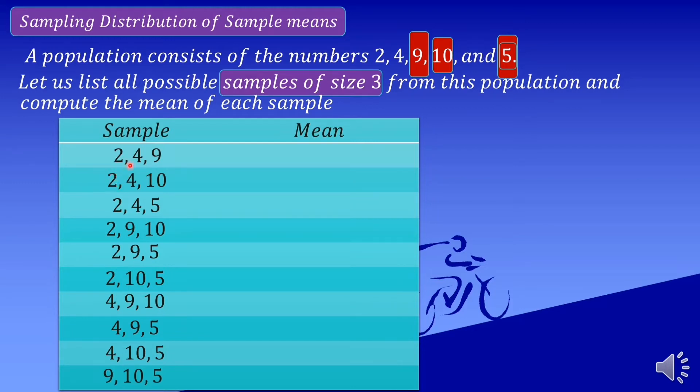So to find the mean of each sample, add lang natin 2 plus 4 plus 9, that is equal to 15. Since we have 3 numbers here, divide by 3. 15 divided by 3 is 5. For our sample number 2, 2 plus 4 plus 10 is equal to 16 divided by 3, that is 5.33. We can use the same procedure to compute the mean of each sample.